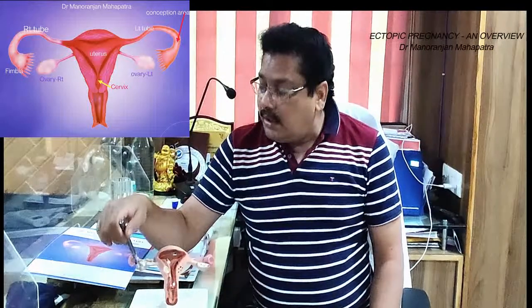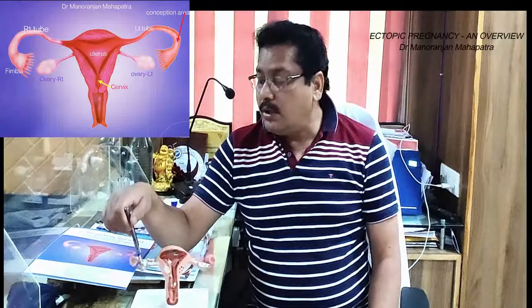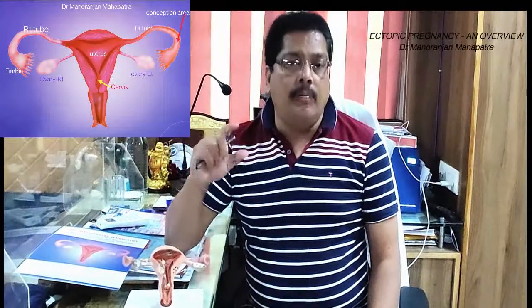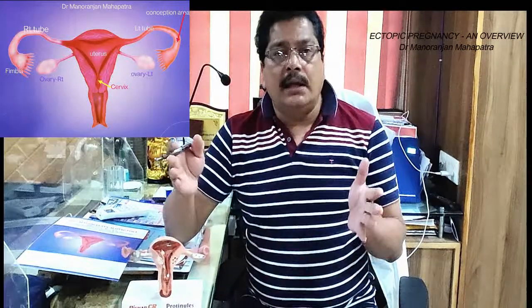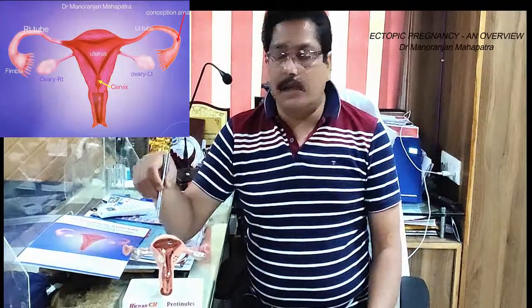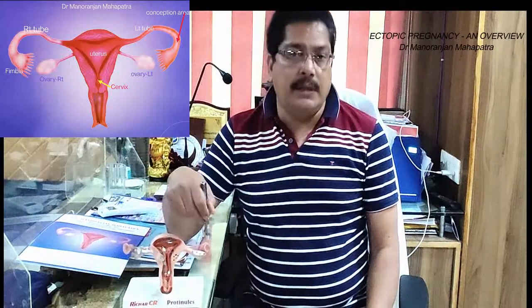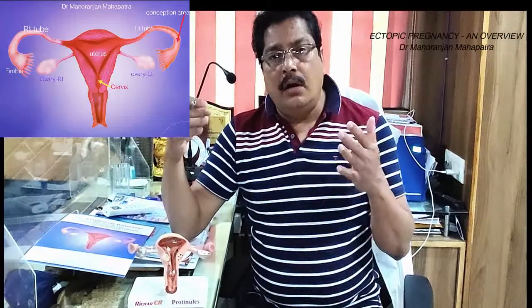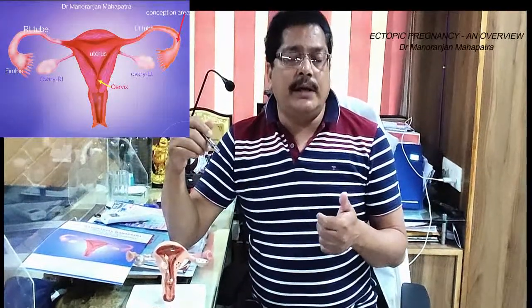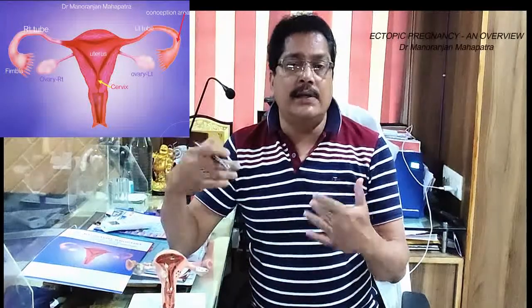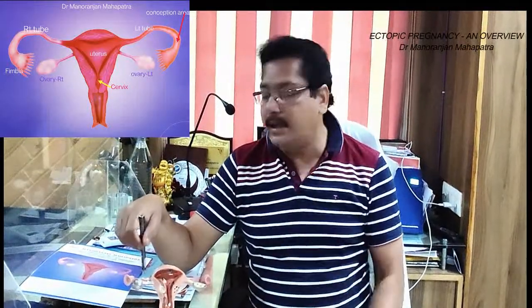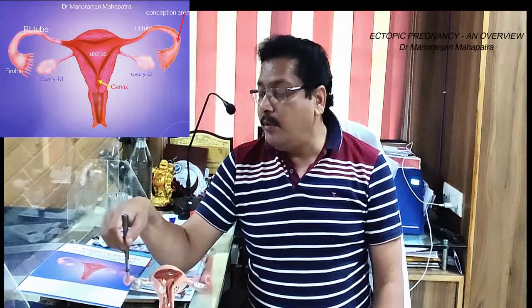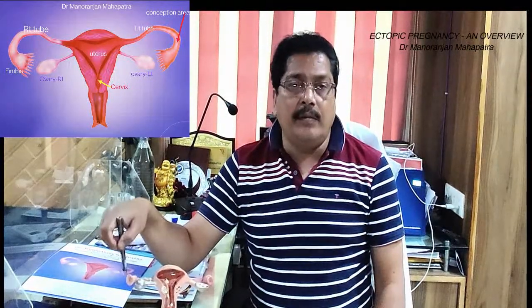There are two ovaries on the sides of the uterus, and one ovum or egg is produced on the 14th day of a normal 28-day menstrual cycle. On the 14th day there occurs the release of one ovum from either ovary — 14 days into a 28-day cycle, or 14 days prior to the next due date of menstruation. This egg will be picked up by the finger-like fimbria of the tube.